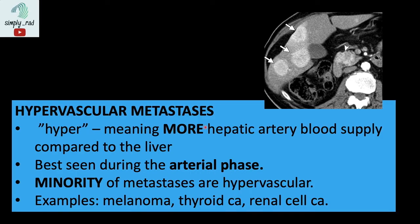To repeat, hypervascular metastases are lesions which have more hepatic arterial supply, hence are best seen in the arterial phase. Examples of malignancies which produce hypervascular metastases are melanoma, thyroid carcinoma, and renal cell carcinoma.